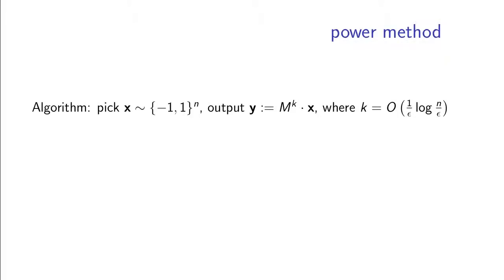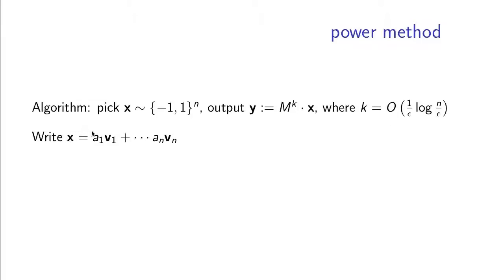Let's get back to the power method algorithm. Recall the algorithm just picks a random plus-minus one vector and then computes m to the k times x, where k is properly chosen. We will see in the analysis why k has to be chosen in this way. Now just for the sake of the analysis, write x as a linear combination of a basis of eigenvectors.